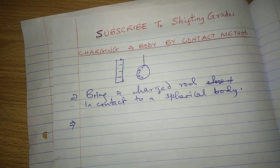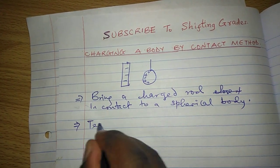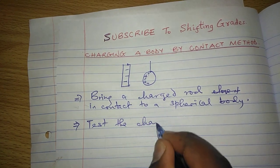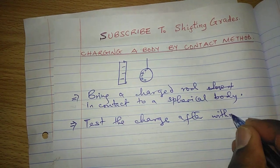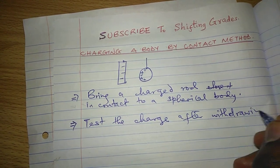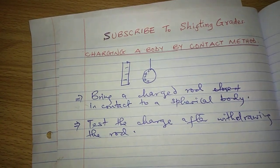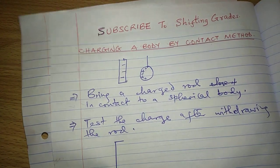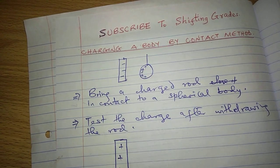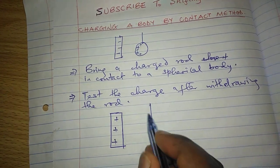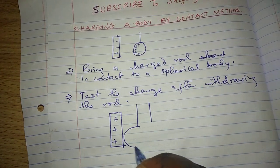Then once you do that, you can test the charge after withdrawing the rod. What happens in the contact method is that once we bring a positively charged rod — not close to, but in this case touching — make sure that they are in contact.